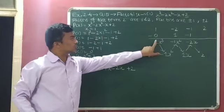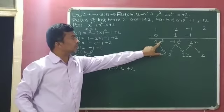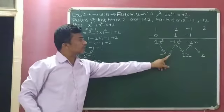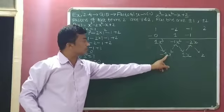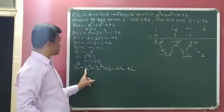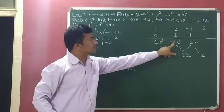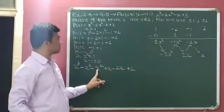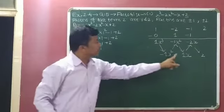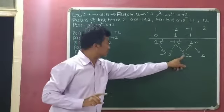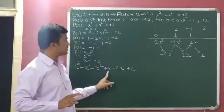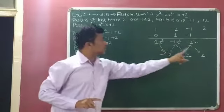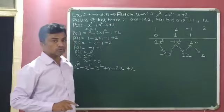So see given: 1x raised to 3 — normally we don't write 1, so x raised to 3. Minus 1x square — normally we don't write 1, so minus x square. Then 1x — we don't write 1, so only x. Then minus 2x, so minus 2x. Plus 2, then plus 2.